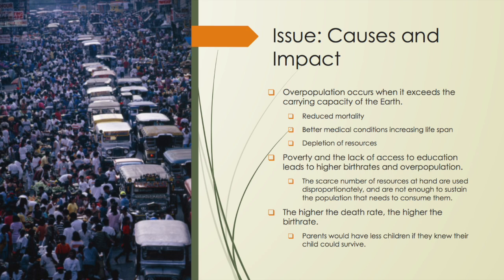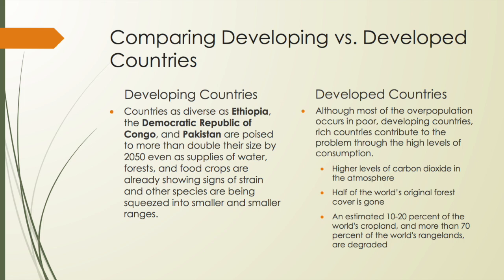The higher the death rate, the higher the birth rate. Parents would have fewer children if they knew their child could survive.